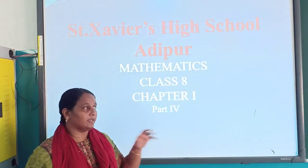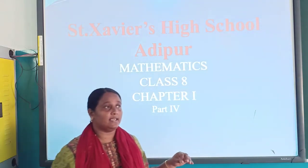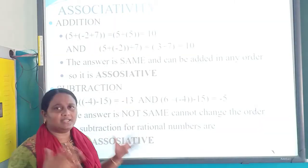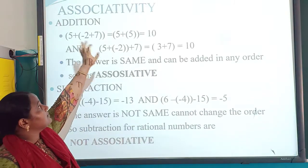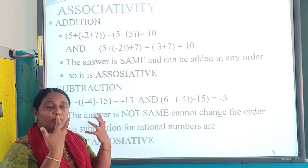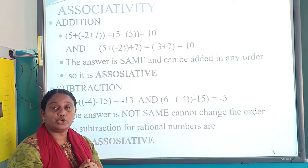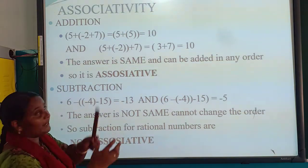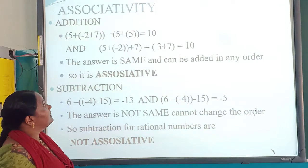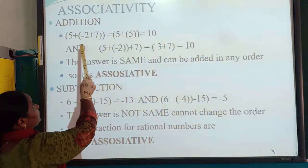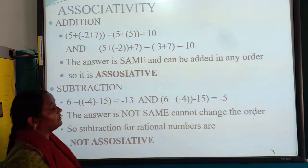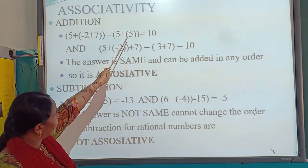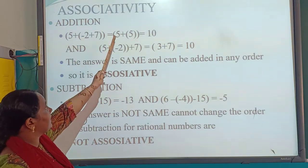Now we are going to discuss the associative property of rational numbers. What is meant by associativity? Associativity means we have two or more numbers, and we can change which numbers are grouped in brackets first. For example, when I am adding (−2 + 7), I get 5, and then 5 + 5 gives me 10.